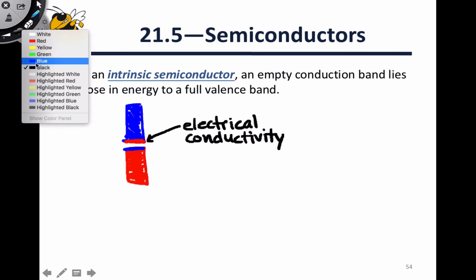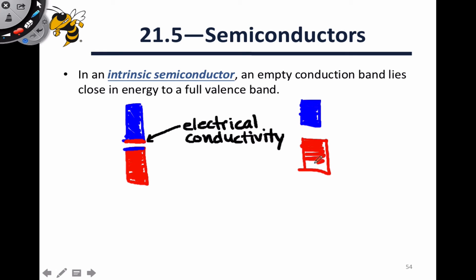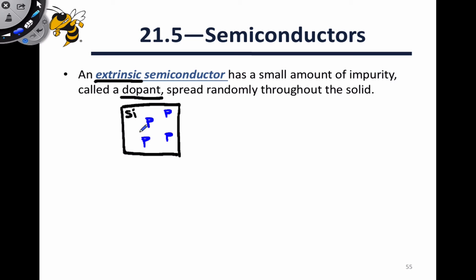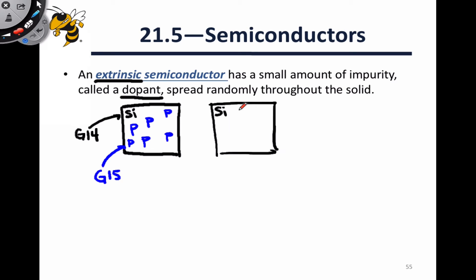However, many semiconductors — including most silicon-based ones found in everyday life — have larger band gap energies and need additional assistance promoting electrons to the conduction band. In an extrinsic semiconductor, we take a substance like silicon and include another species called a dopant spread randomly throughout the solid. We often dope group 14 semiconductors with either group 15 elements like phosphorus or group 13 elements such as boron, and these two types of dopants give rise to two different types of semiconductors.